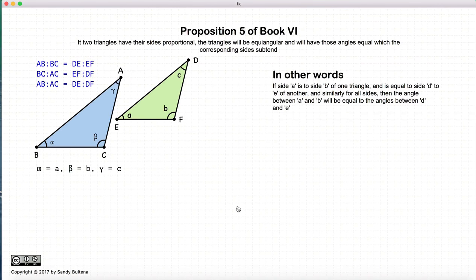This video presentation is going to be on Proposition 6 of Book 5. This proposition is the inverse of Proposition 4. Proposition 4 stated that if we had equal angular triangles, then these ratios would be true. This proposition is the inverse. If these ratios hold true, then the two triangles are equal angular.